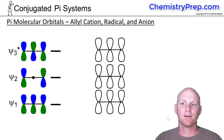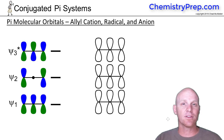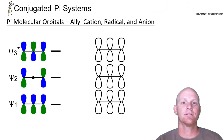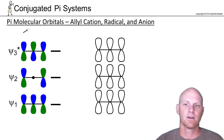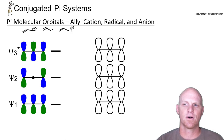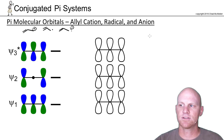Now that we've looked at 1-3-butadiene, we're going to take a look at the allyl system. That involves the allyl cation, the allyl radical, and the allyl anion. With an odd number of atoms involved in the system and an odd number of p-orbitals, we'll have a couple of interesting things here. In every single one of these, you've got three p-orbitals involved in a conjugated system.